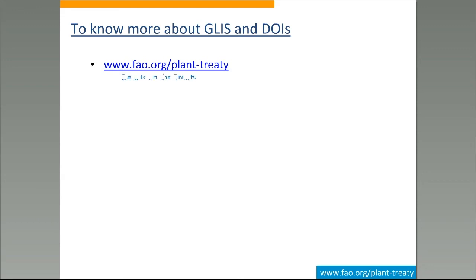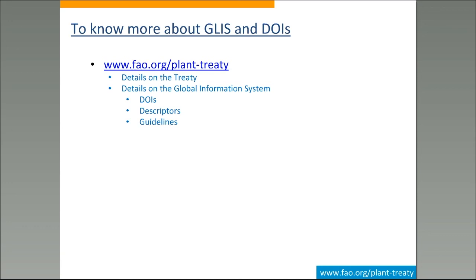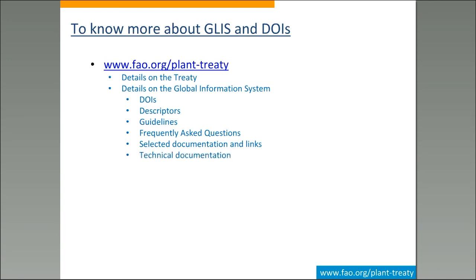So how do you find out more about GLIS and DOIs? By going to the treaty URL on the FAO website, where you will find details on the treaty, the global information system, DOIs, the descriptors we have published, and guidelines — use cases through which you can understand in what cases a new DOI should be assigned. Nothing here is compulsory — it's all voluntary — and we need to make sure that GLIS attracts people because of its advantages. You also have frequently asked questions and links to selected documents and websites.